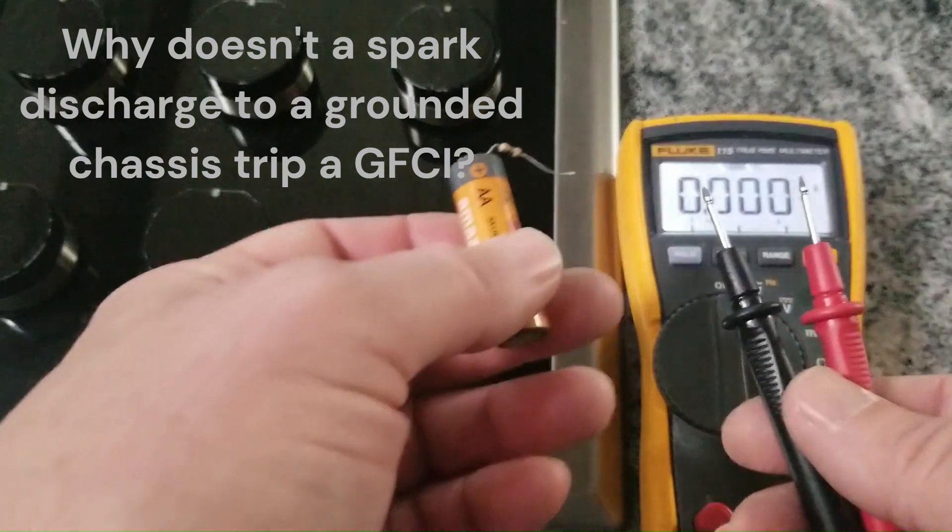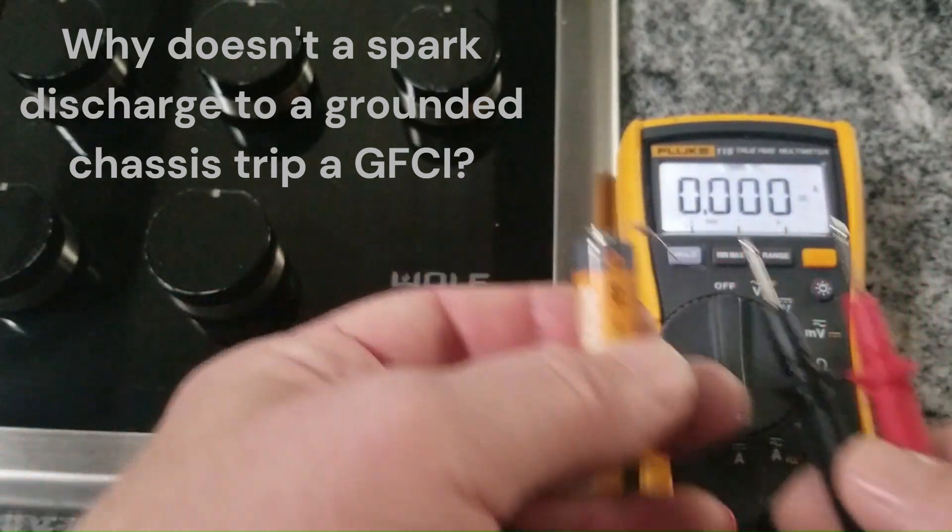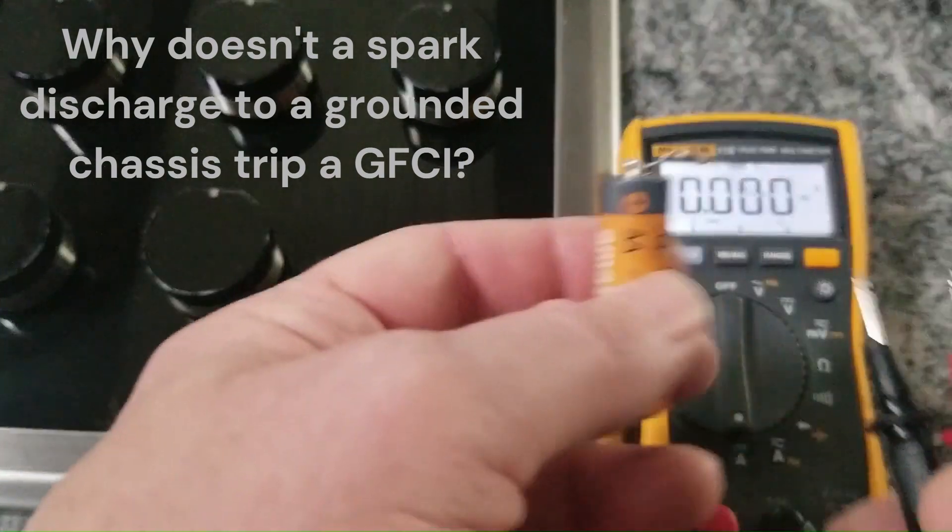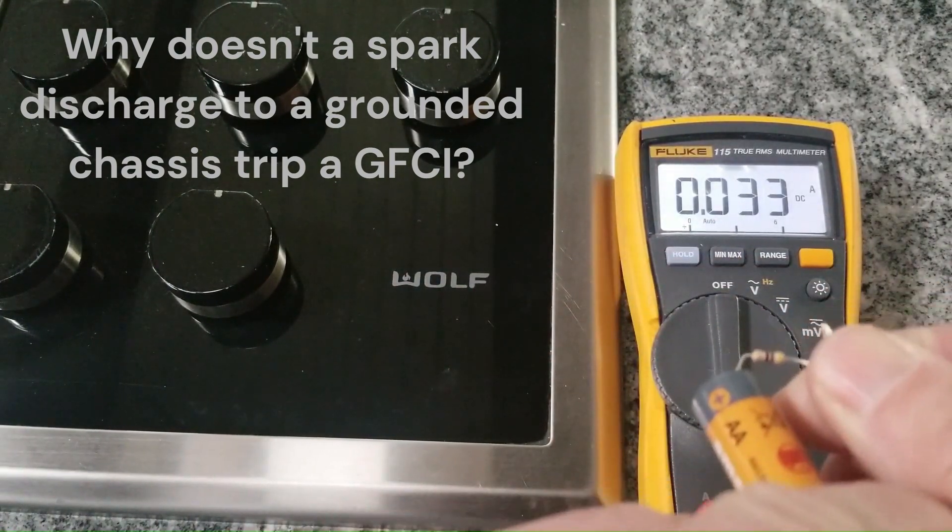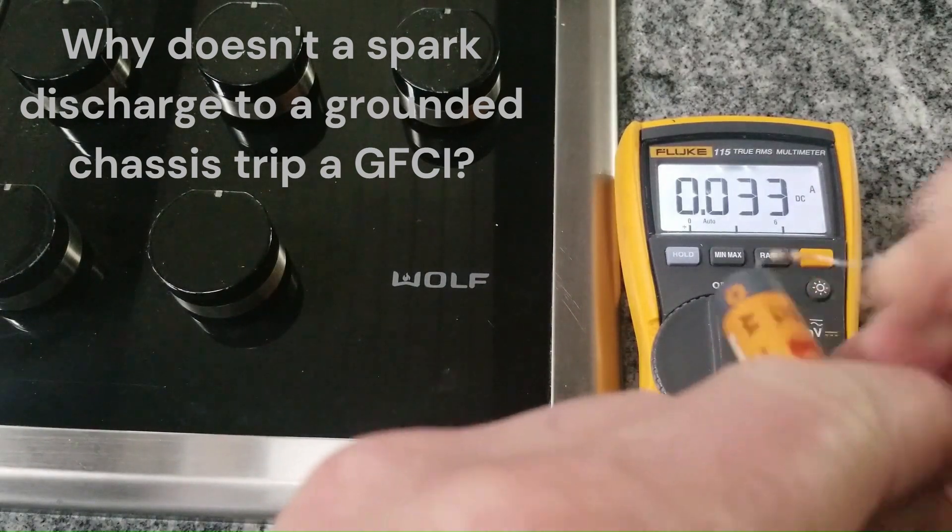I'm going to measure the current through this circuit here, and a little Ohm's law tells us that 1.5 volts divided by 47 ohms is going to be somewhere around 30 milliamps, and that's what we're getting, around 30 milliamps right there.